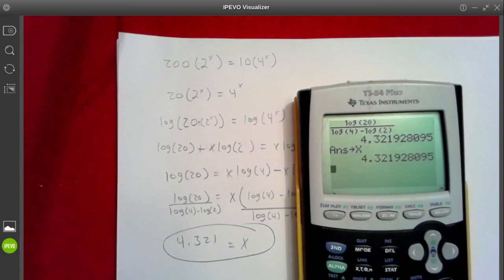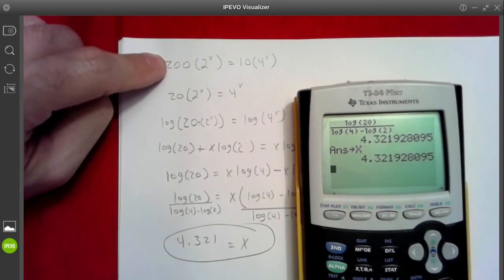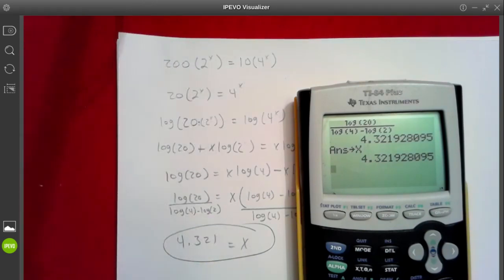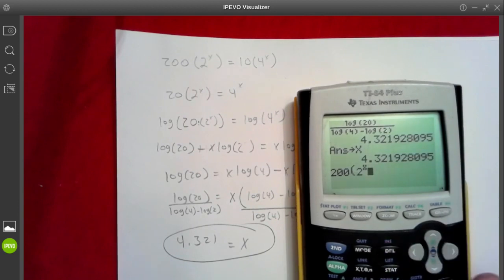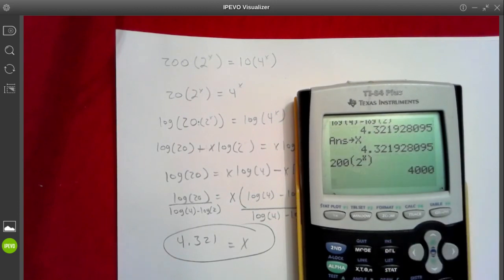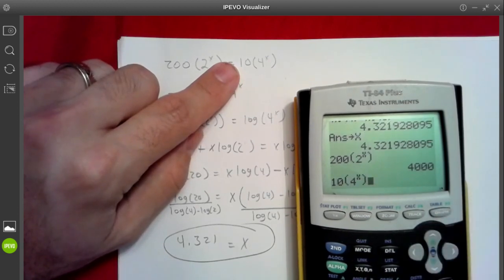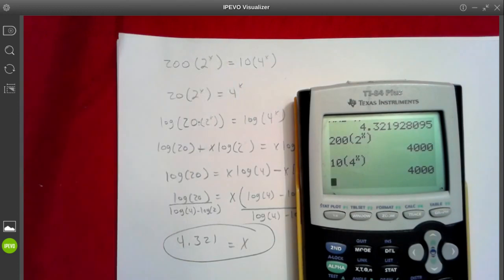Store to x. And we'll see if the left hand side matches what we get for the right hand side. 200, 2 to the x. We get 4,000. And then for this side, 2 parentheses, 4 to the x. 4,000. Nice.